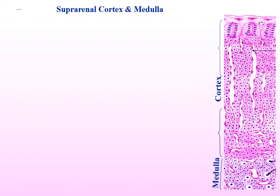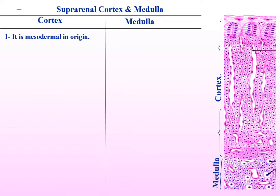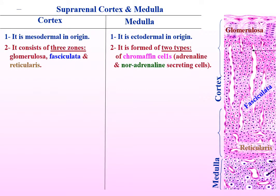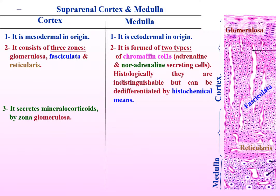Comparison between suprarenal cortex and medulla: the suprarenal cortex is mesodermal in origin and consists of three zones — zona glomerulosa, zona fasciculata, and zona reticularis. The suprarenal medulla is ectodermal in origin and is formed of two types of chromaffin cells — adrenaline and noradrenaline-secreting cells. Histologically they are indistinguishable, but can be differentiated by histochemical means.